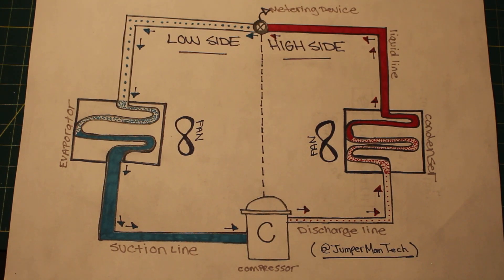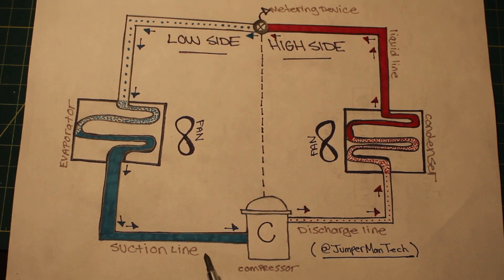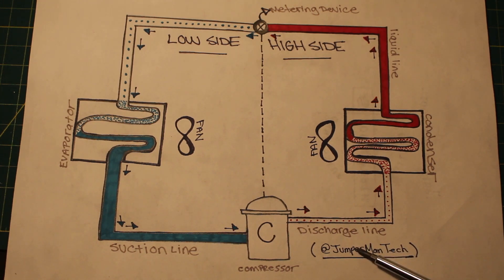To begin our lesson, we're going to start with our compressor. A compressor is both a motor and a pump that compresses refrigerant and moves it throughout the system. Refrigerant enters through the suction line as a low-pressure, low-temperature, superheated vapor, and exits through the discharge line as a high-temperature, high-pressure vapor as refrigerant is compressed.